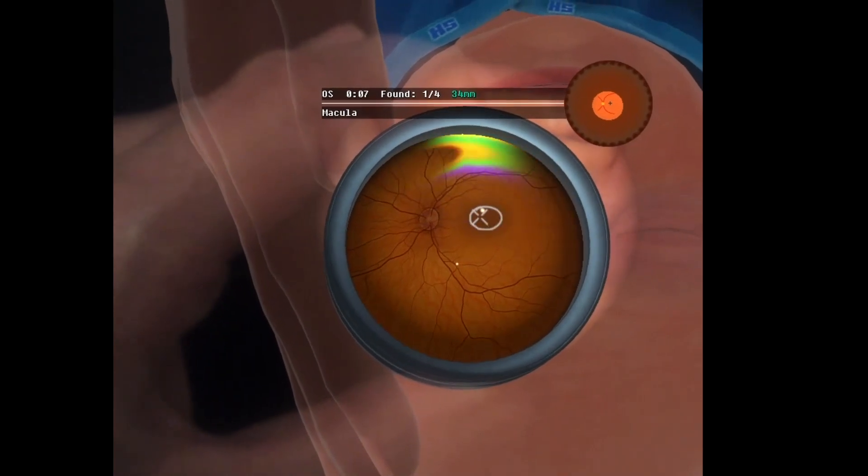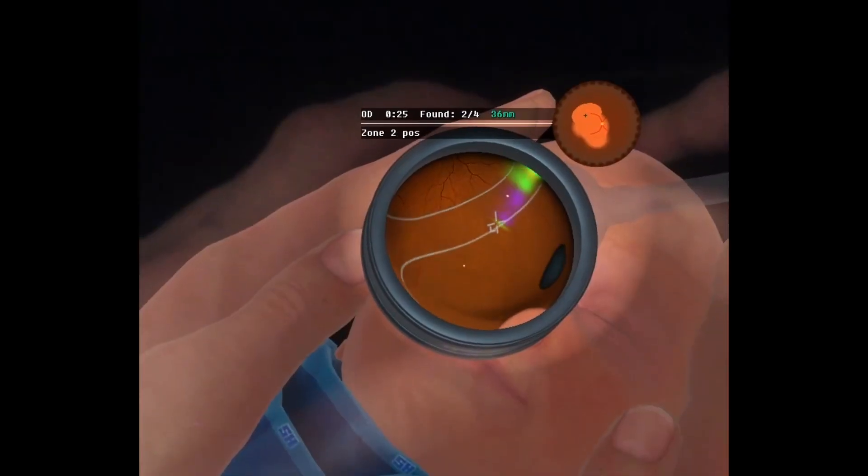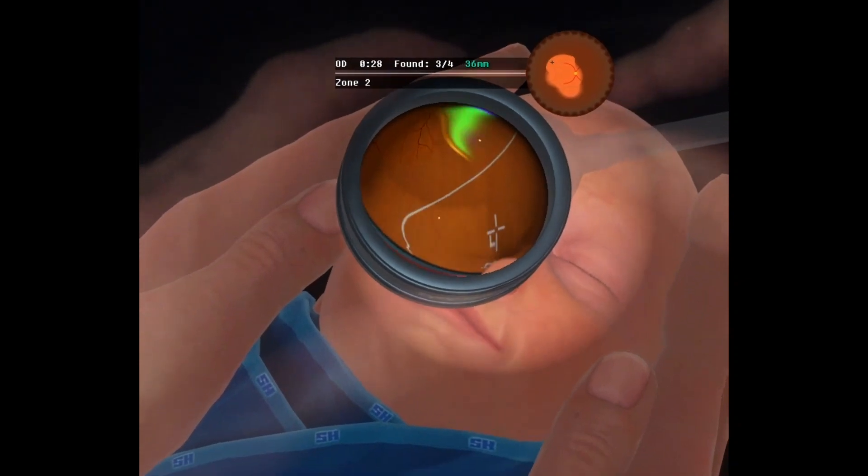The IC Indirect ROP teaches the main characteristics of ROP and how to recognize the different zones and stages.